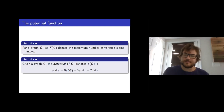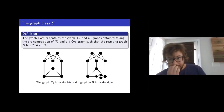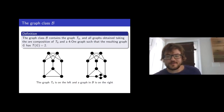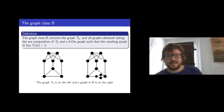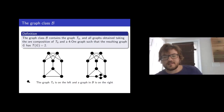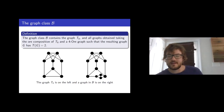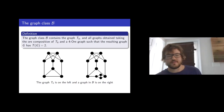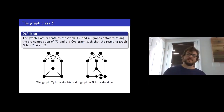We also need a special graph class B. It consists of the graph T8 and all graphs obtained from taking a 4-OR graph and T8, then OR-composing them such that the resulting graph has two vertex-disjoint triangles. You can promptly forget about these — you just need them to state the theorem.